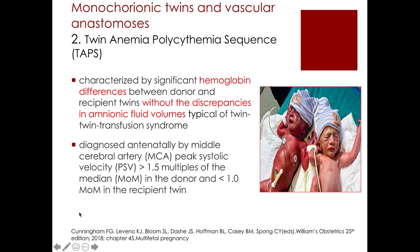Twin anemia polycythemia sequence (TAPS) is characterized by significant hemoglobin differences between the donor and recipient twins without the discrepancies in amniotic fluid volumes typically seen in TTTS. It is diagnosed antenatally by middle cerebral artery peak systolic velocity greater than 1.5 multiples of the median in the donor and less than 1.0 multiples of the median in the recipient twin.